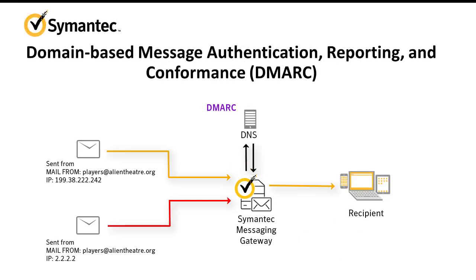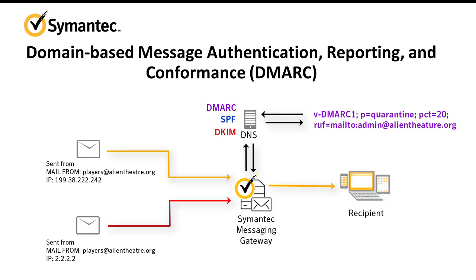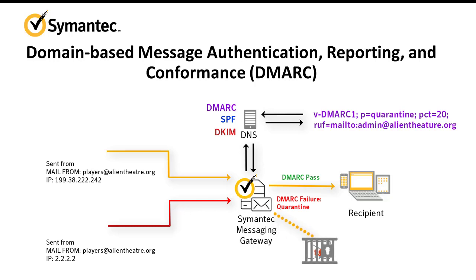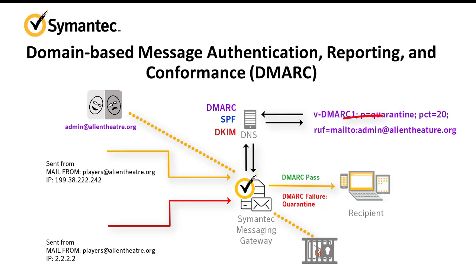DMARC authenticates senders using SPF and DKIM, but then adds a way for senders and receivers to share information about the results. Sending domains can publish their DMARC policies in their DNS text records. When a message is sent with a DKIM signature, Semantic Messaging Gateway checks the sender's DNS records for a DMARC policy and the SPF and DKIM records. The SPF and DKIM authentication results, plus the sender's published DMARC policy, generate a DMARC result. Semantic Messaging Gateway then applies the content filtering policy that matches the DMARC result.